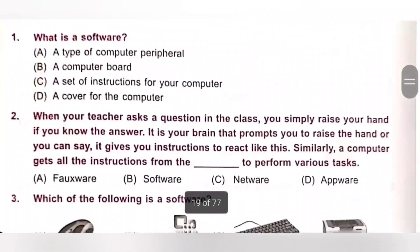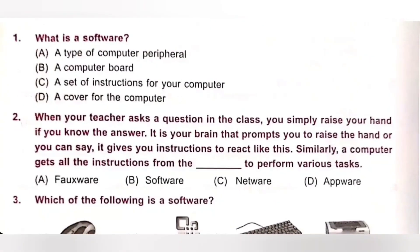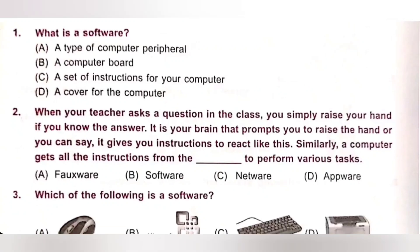First one. What is a software? Option A: a type of computer peripheral. B: a computer board. C: a set of instructions for your computer. D: a cover for the computer. A software is a set of instructions for your computer. Option C is the correct answer.